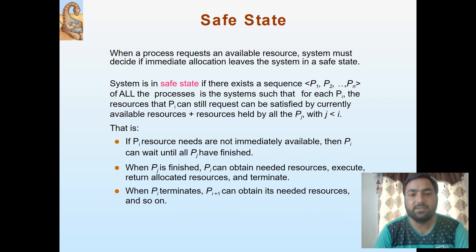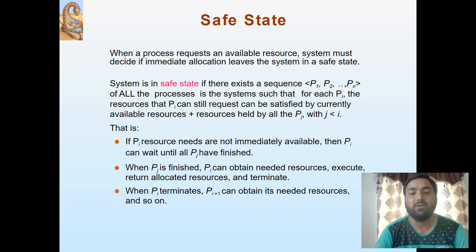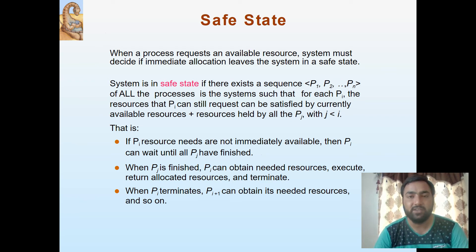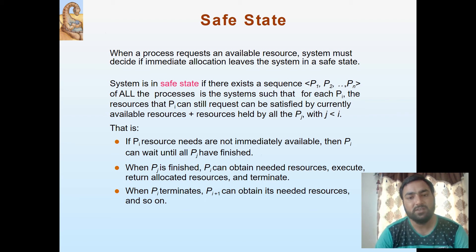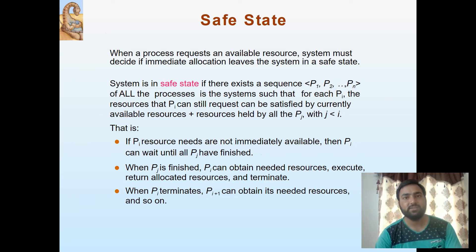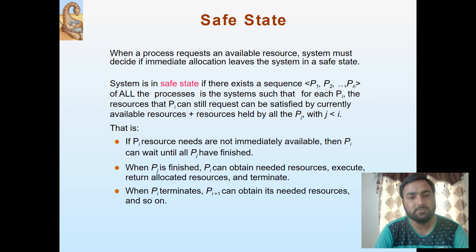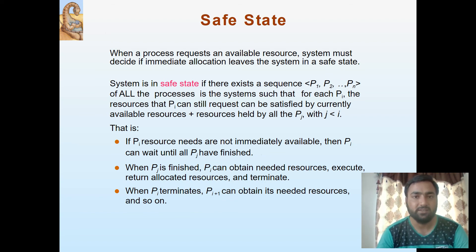If the process resource needs are not immediately available, the process can wait until other processes have finished. When other processes finish, resources will be freed, and then the waiting process can obtain the resources and complete execution. After execution, resources will be released and the process will be terminated. When a process terminates, another process can obtain the needed resources, and so on — this cycle continues in the system.